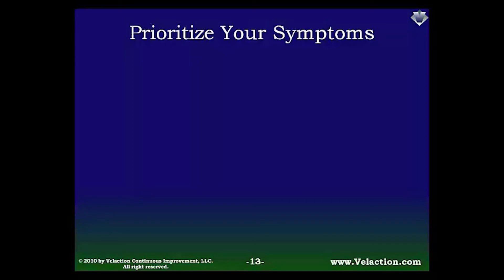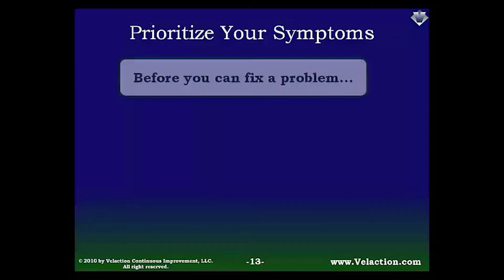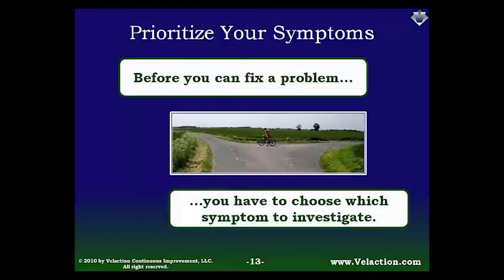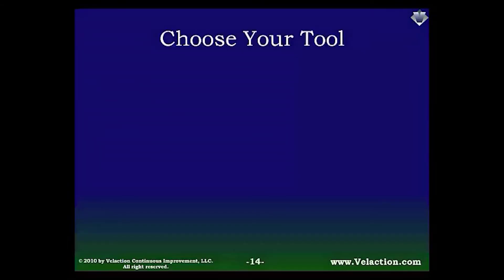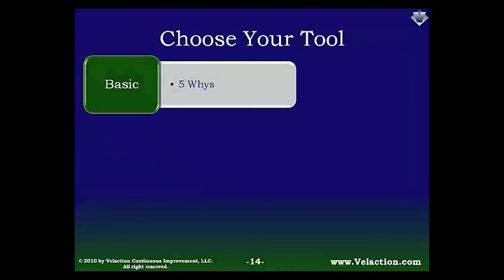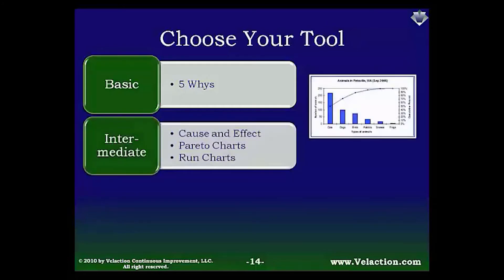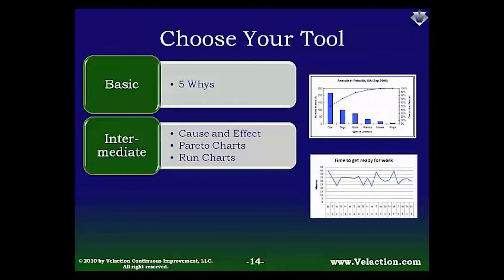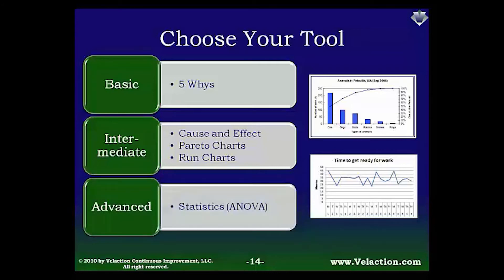Once you identify the problem, you'll need to decide what to work on first — often a simple matter of prioritization. When selecting the symptom to work on, you'll likely use frequency, cost, and the expected ease of solution to decide where to put your effort. There are a wide range of tools available. The most basic tool is the five whys. Intermediate tools include the cause and effect diagram, the Pareto chart, and run charts. The most advanced means of doing root cause analysis rely on statistics.